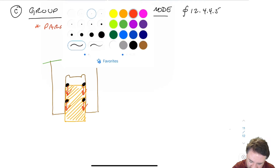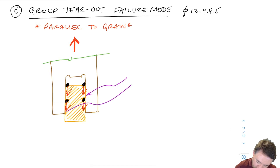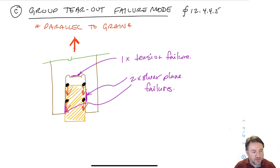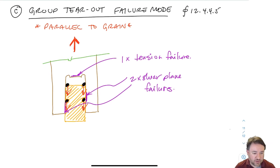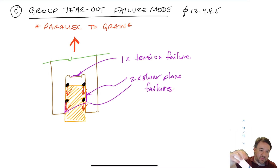Instead of having two shear planes per row as in row shear, I now have one big chunk with only one shear plane on each side — so still two shear planes total, one on the left and one on the right. In addition to that, I have a tension failure in the middle. So I have to fail two shear planes plus one tension plane. That tension plane per unit length is significantly stronger than the shear planes, because the shear planes are failing the lignin — shearing along the grain is relatively easy — but failing in tension means rupturing the wood fibers (the straws), which is quite a bit stronger.